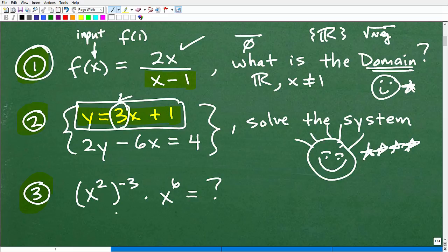So let's take a look at this last problem. What is the answer? Well, you got to know a little bit about powers and exponents. So x squared to the negative third power, you have to understand that I can use the distributive property and take this negative three and multiply it by that two.